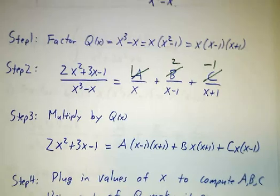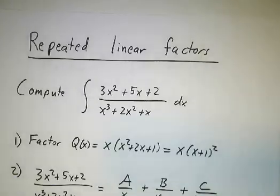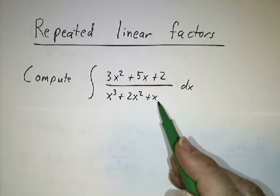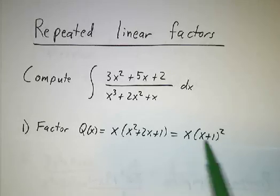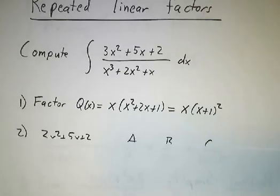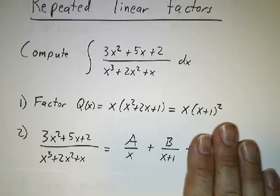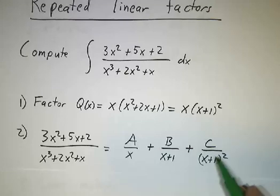The last thing we're gonna do is talk about what happens when you've got repeated linear factors. So let's look at this example. In this example, the denominator factors as x times x plus 1 squared. When that happens, you can't just write it as A over x plus B over x plus 1. You also need a term that looks like C over x plus 1 squared.